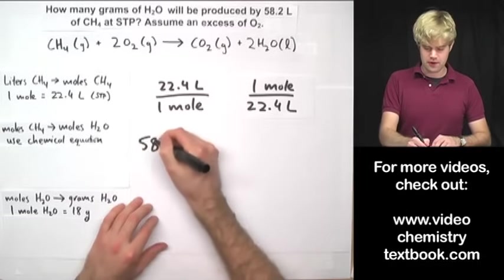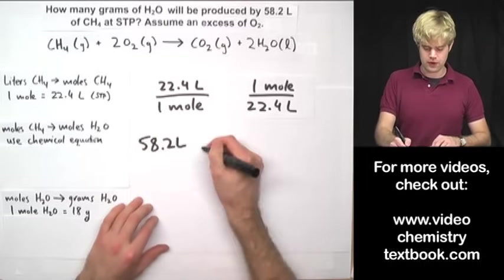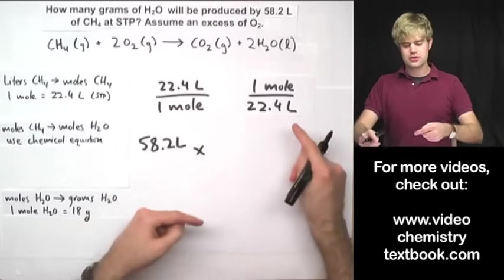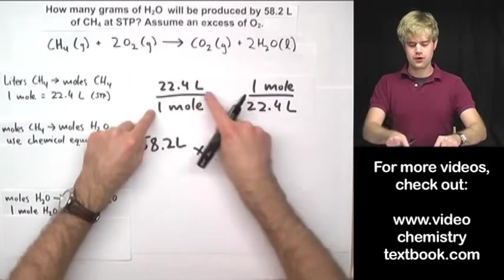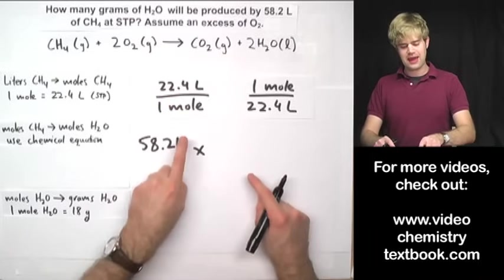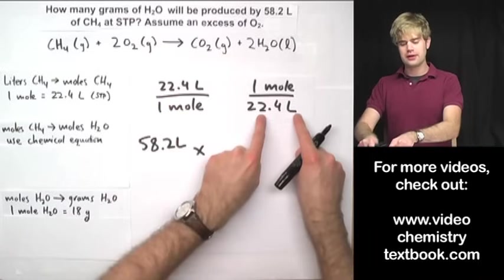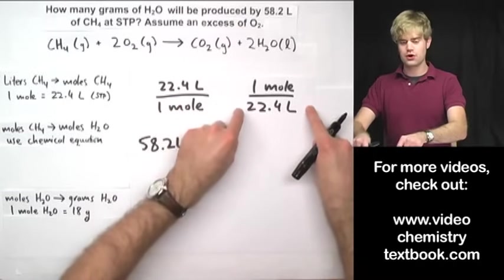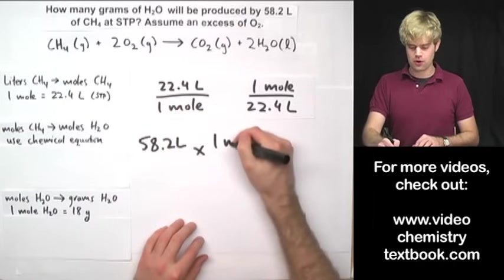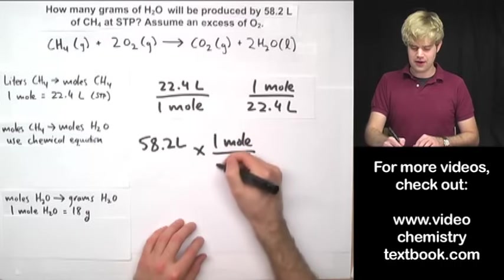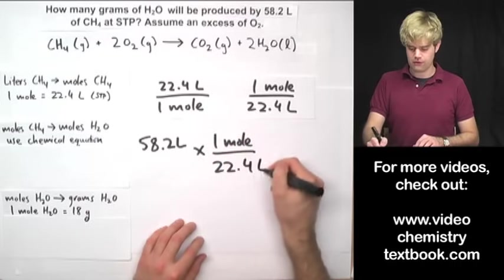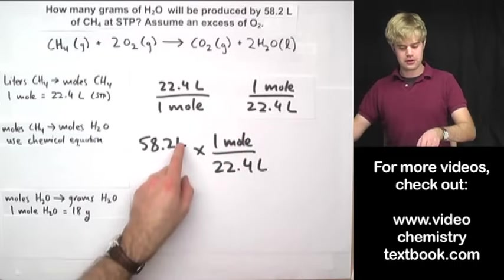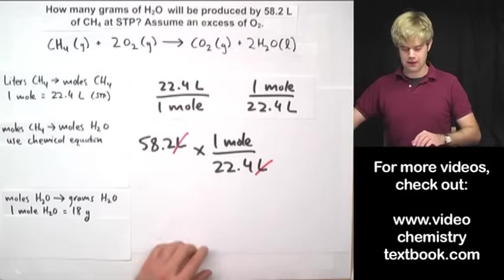I'm going to start with 58.2 liters. To convert this to moles, I want to use the conversion factor that is going to let me cancel out liters. So I want liters to end up on the bottom. That means that I'm going to use this version of the conversion factor. So one mole on the top divided by 22.4 liters on the bottom. Now I have liters up here and liters down here, so they cancel out.